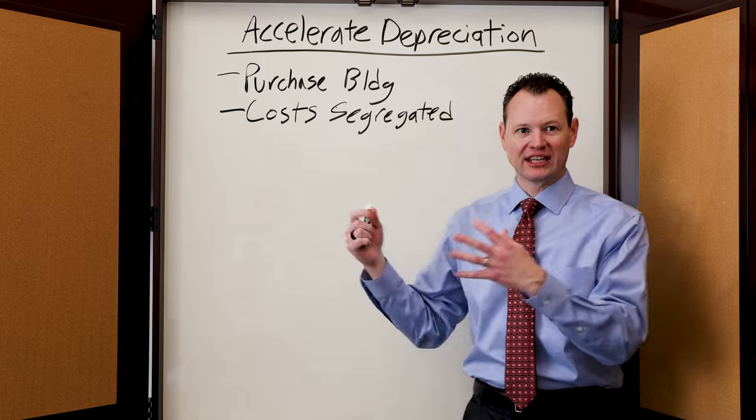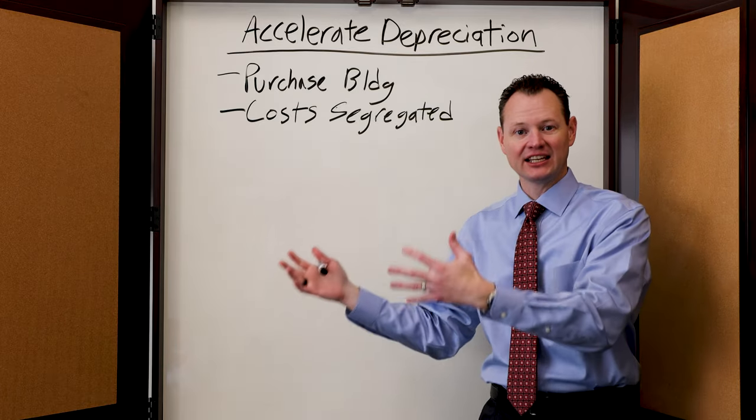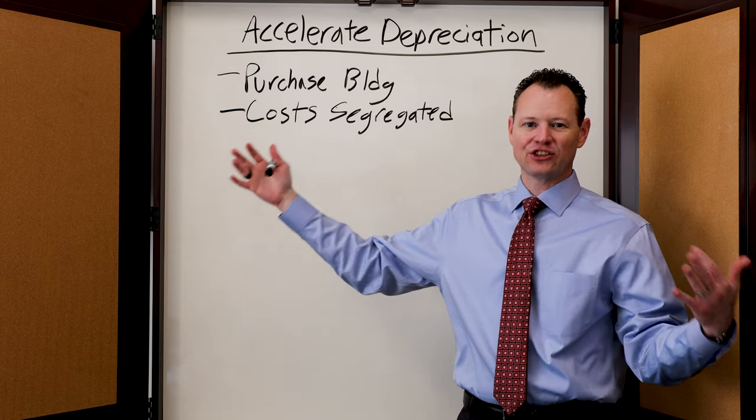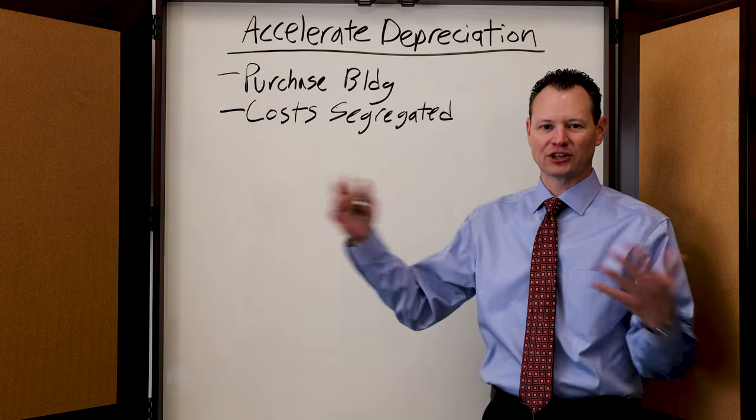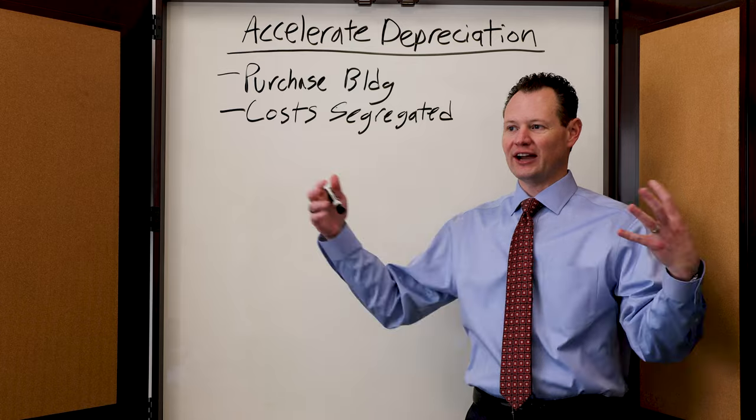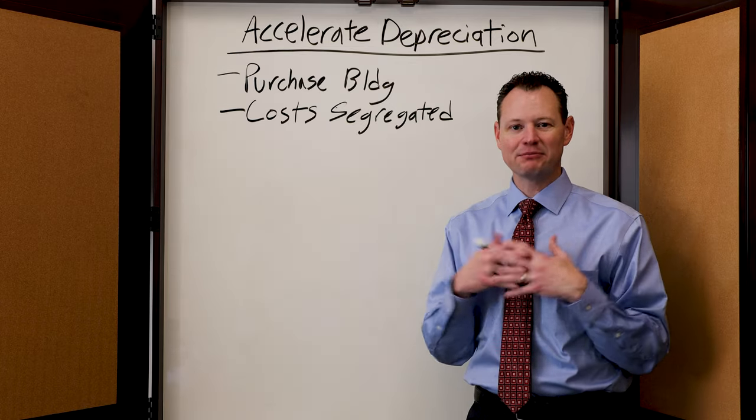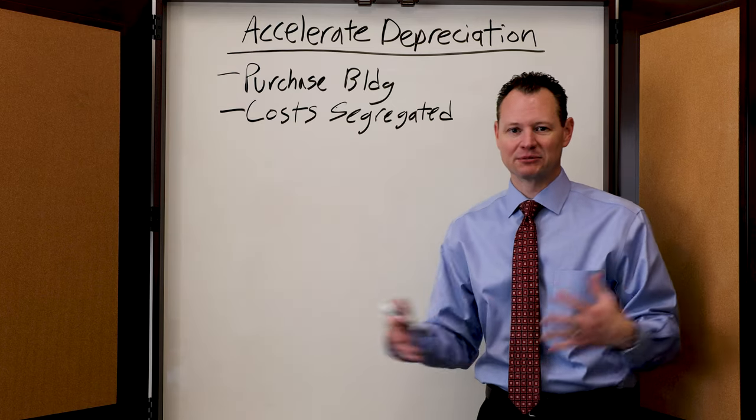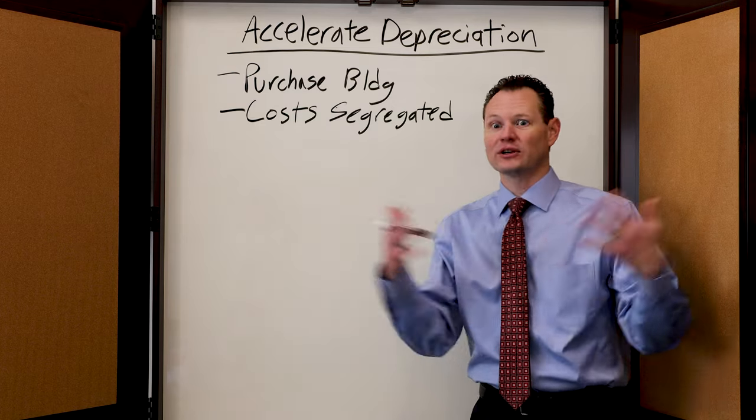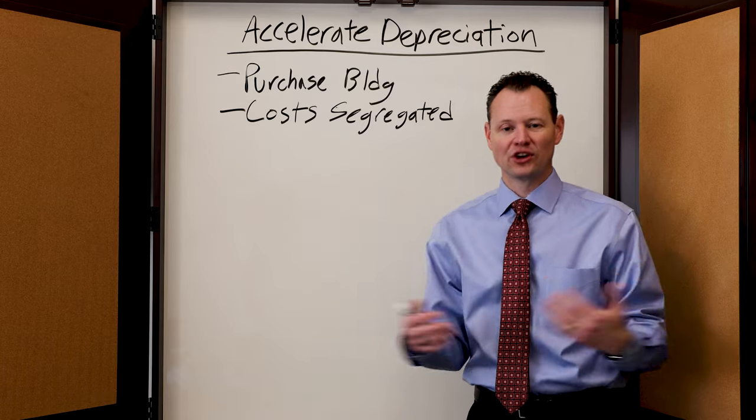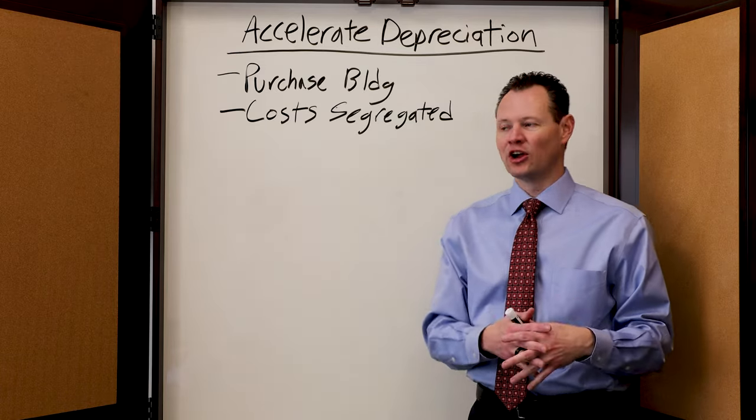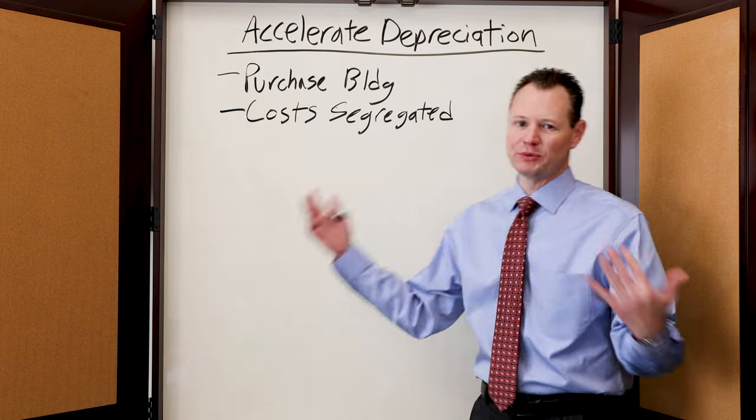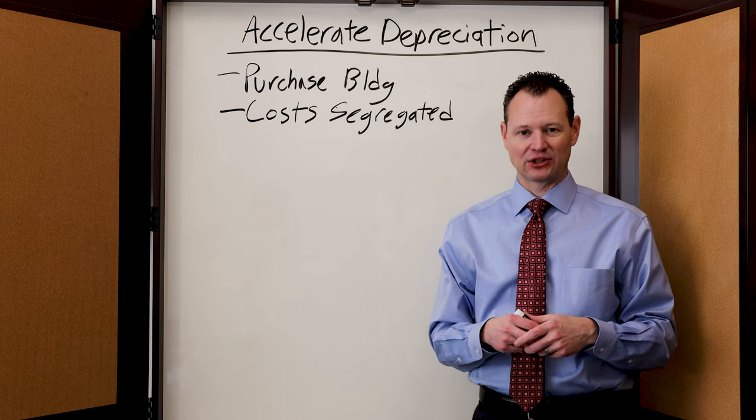When you have the cost segregated, you have a study that comes in and says, even though you've purchased a building and that building has a 39 year life, let's say it's a commercial building, you have flooring inside that building that maybe only has a five year life for tax purposes. You have cabinets inside that building that maybe have a five year life or a seven year life, or you have fixtures, furniture, or improvements in that building that are a 15 year life under the tax code.